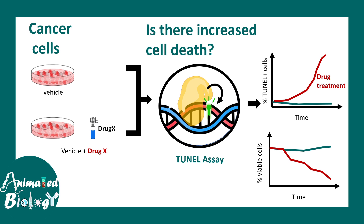Another way to look at this data is to count the percentage of viable cells. All the TUNEL negative cells would be the viable cells. So obviously, if this drug is potent and able to kill cancerous cells, there would be fewer viable cells over time. This is how we can utilize the TUNEL assay to determine apoptosis.